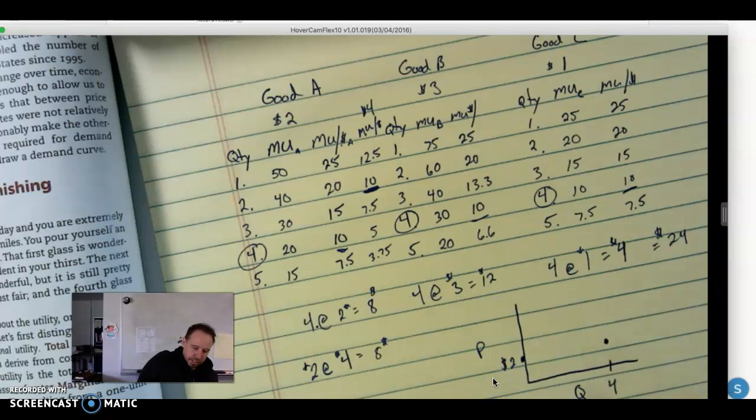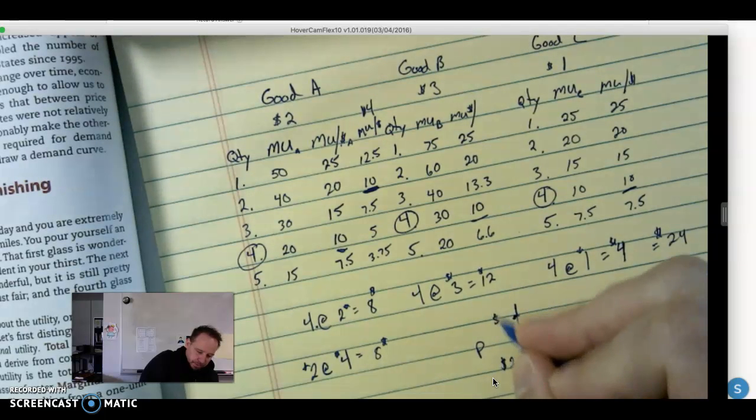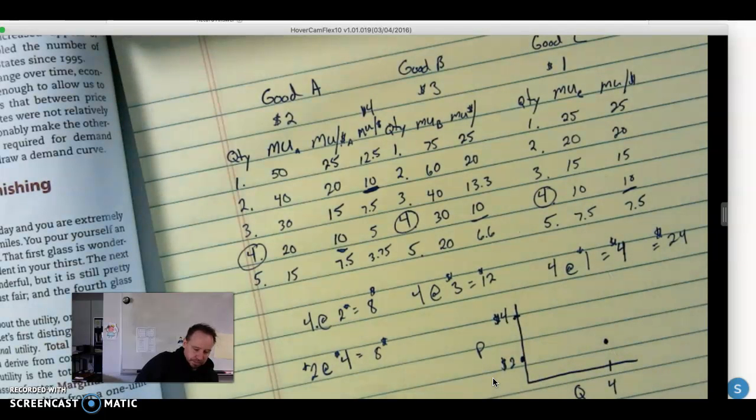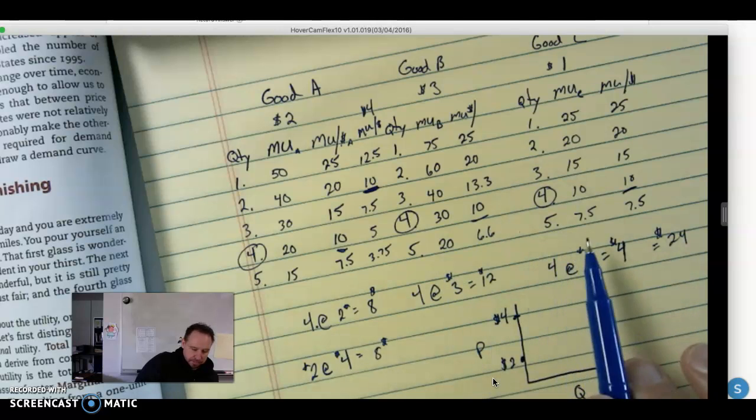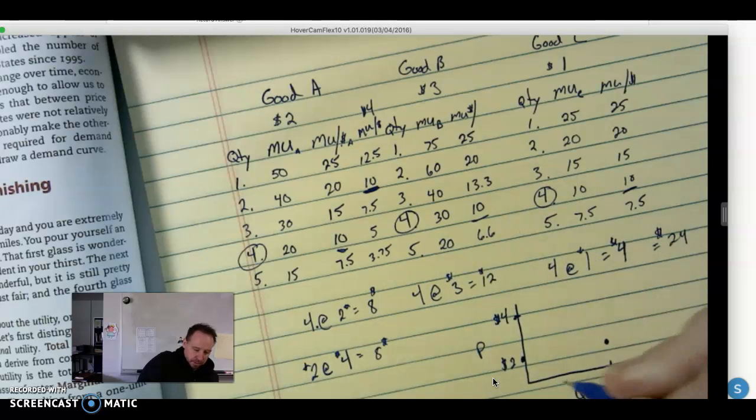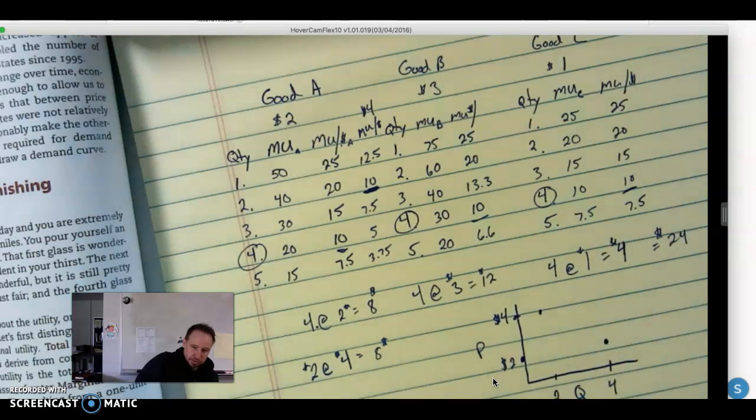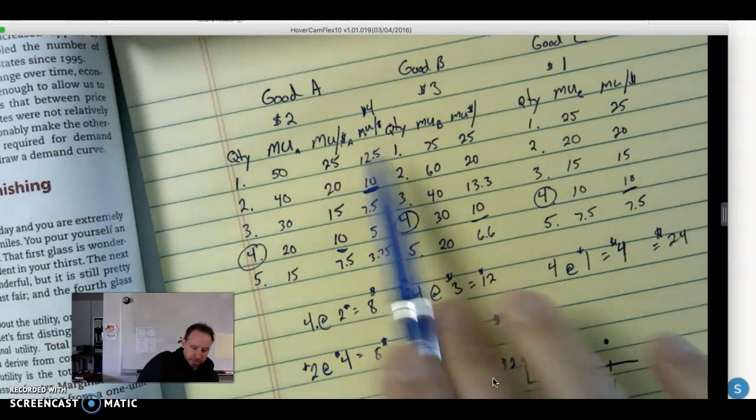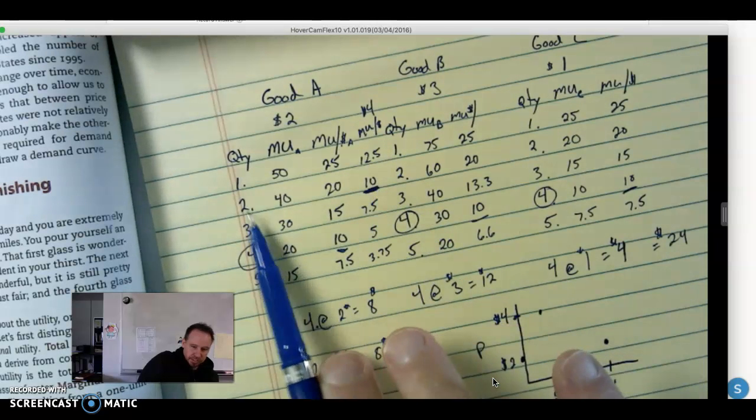Quantity of 4. Price increases up to $4. Price, everything else stays the same, other prices stay the same. Goes up and we'd have a quantity of 2. Remember, because when we change the price, we change our marginal utility per dollar, we found a new quantity, and that was 2.